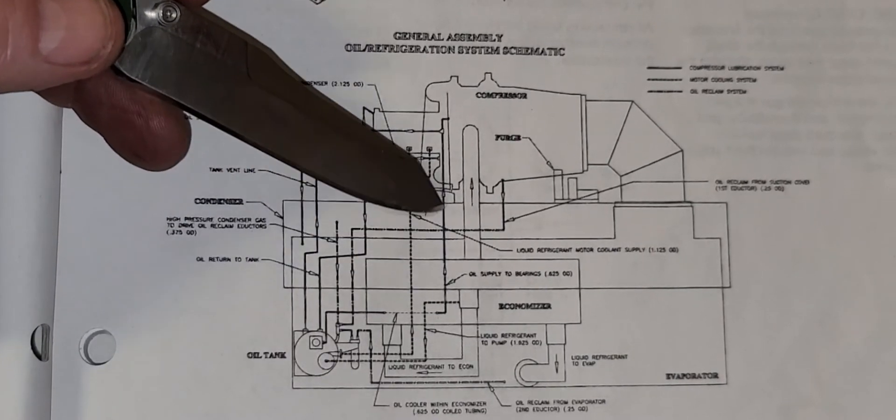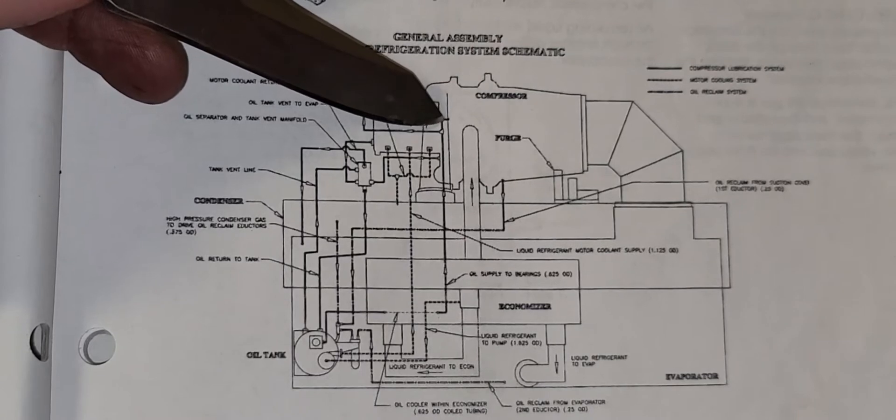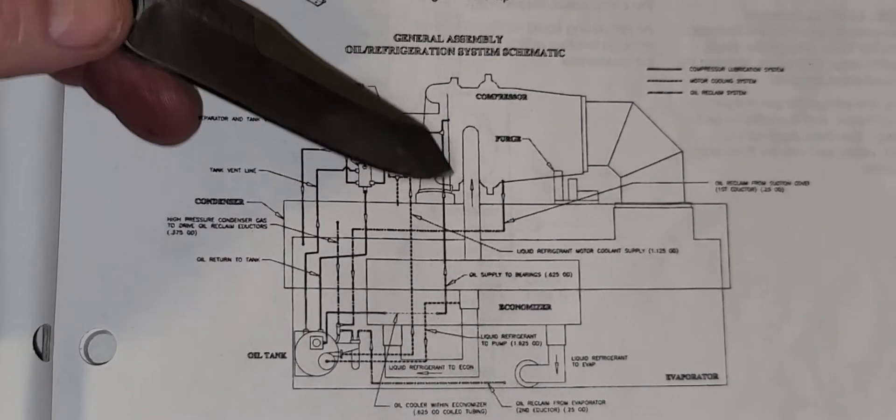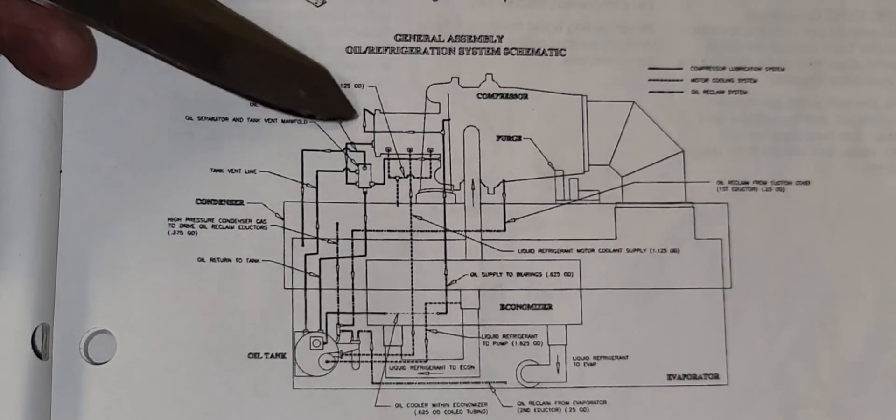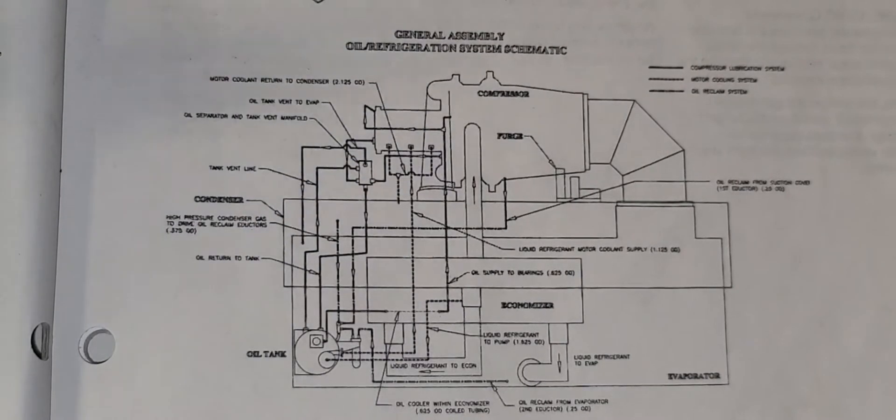So then this oil of course is brought up to the top and it's injected into the front journal bearing and then it's piped over to the back to the two rear bearings.